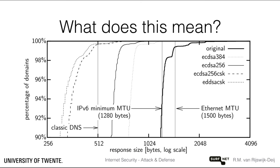This graph shows the effect for DNS key responses, which as you may remember are the hardest problem in DNSSEC, since they are integral to the protocol and cannot easily be blocked. The thick black line on the right shows the current situation where RSA is used for signing. The graph shows the response packet size, and what you can see is that up to 10% of responses are so large that they might be fragmented over multiple packets.